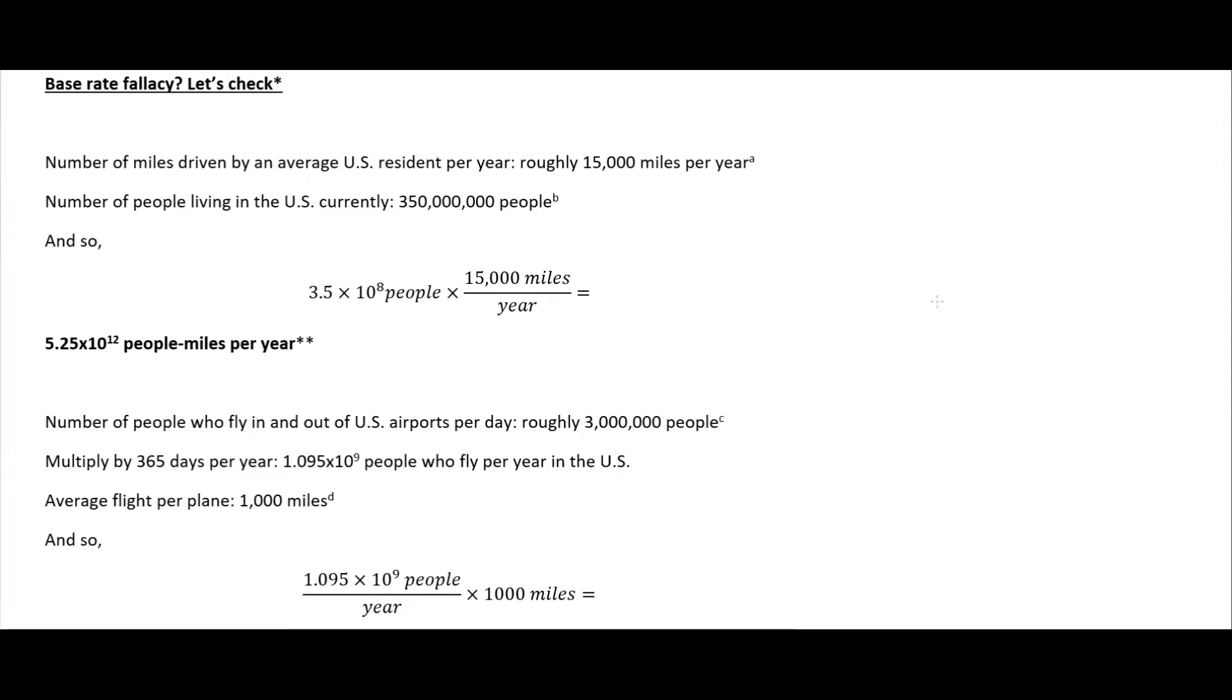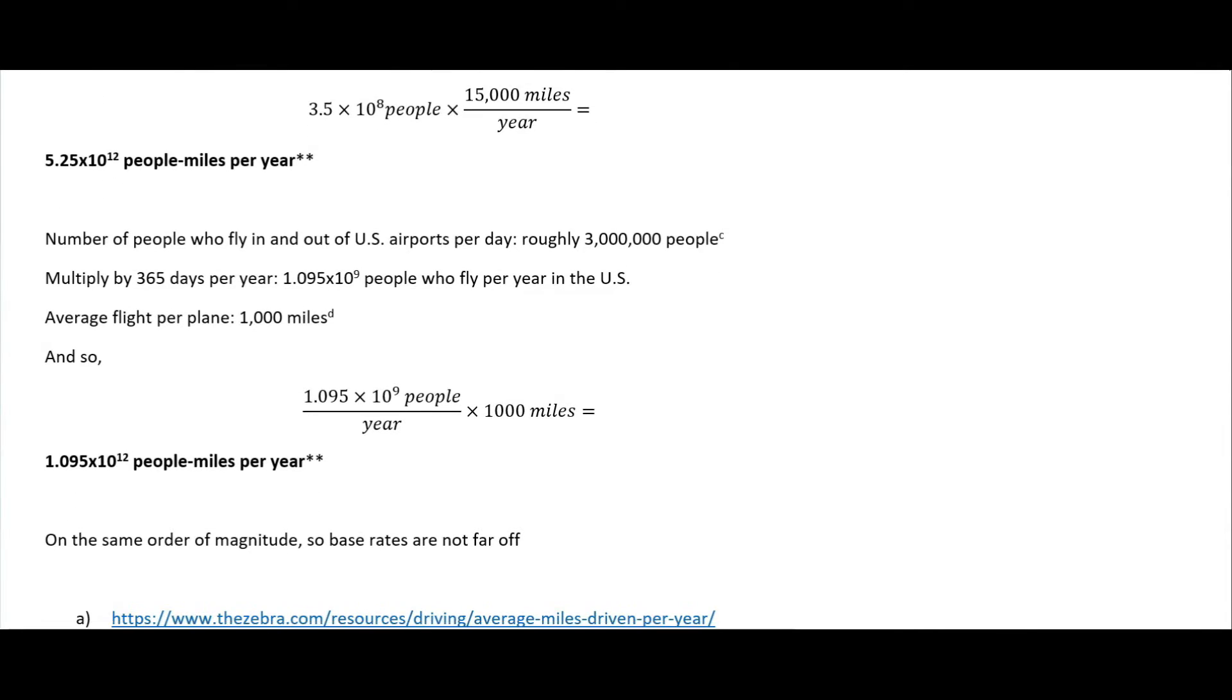I'm not going to go through all the calculations here. One thing to keep in mind is I did the calculations using numbers for just the United States - I couldn't find any for the world. But the take-home message is that we're on the order of 10 to the 12 people-miles per year in both cars and airplanes, so you would expect that to be your base rates for how many accidents happen.